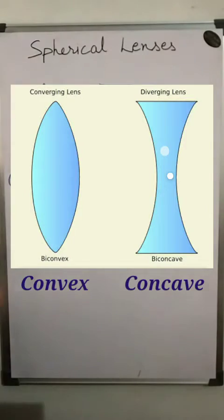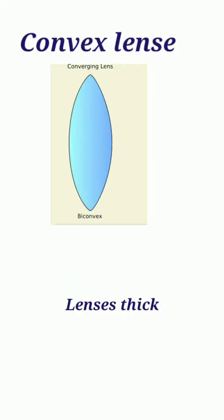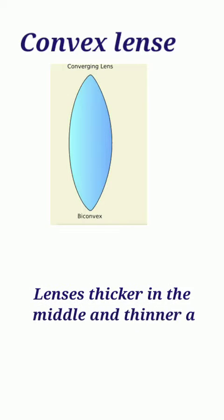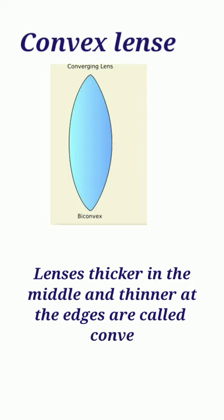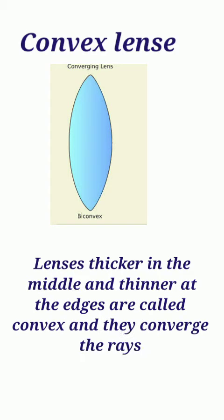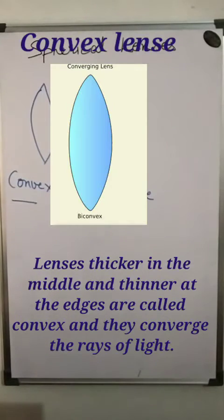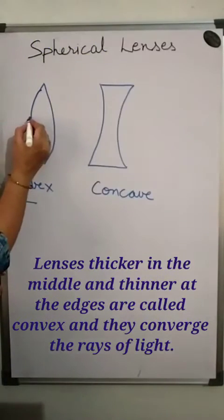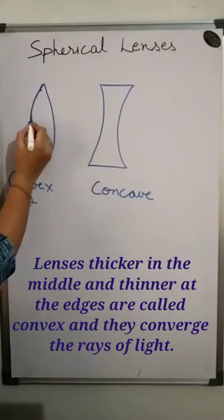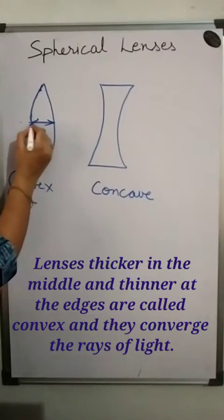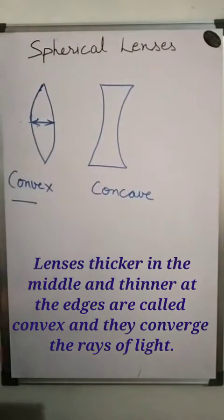Now, coming to the convex lens. Lenses which are thicker in the middle and thinner at the edges are called convex lenses. They converge rays of light. Just see here — these are thicker in the middle and thinner at the edges.